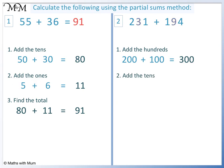Adding the tens: 30 plus 90 equals 120. Adding the ones: 1 plus 4 equals 5.